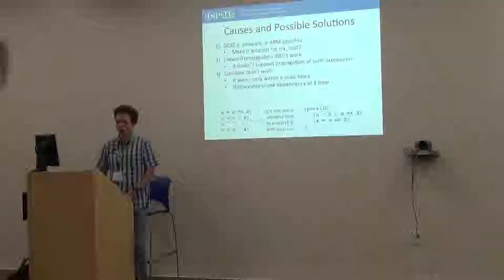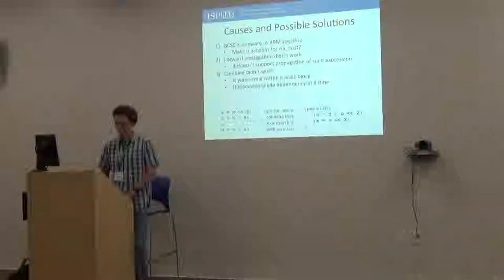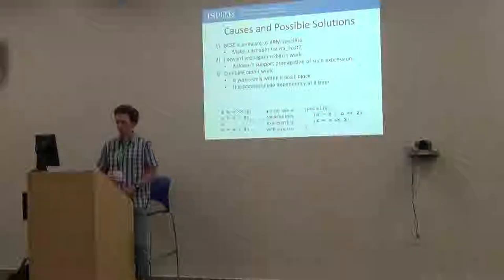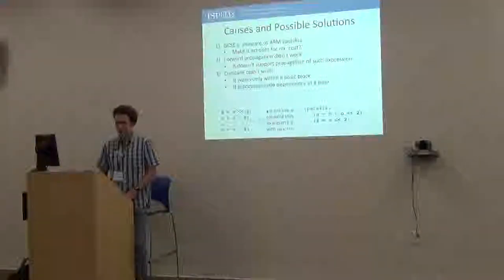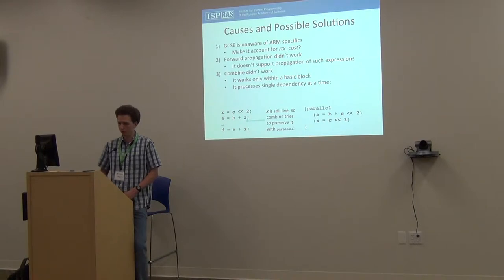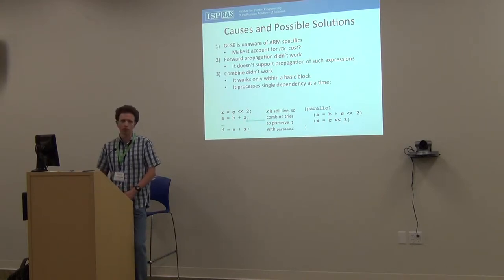GCC is a machine-independent pass, so the only way I can think of making it account for ARM features is considering RTX cost, so it wouldn't put an expression up if the RTX cost doesn't change for the better. Then there is forward propagation, but if I am correct, it only moves constants or registers that would become constants in the place of substitution, and the final expression wouldn't depend on that register. So forward propagation is a different optimization that actually can't move such expressions and shifts.